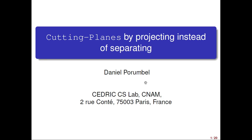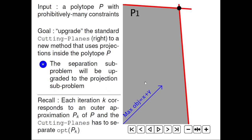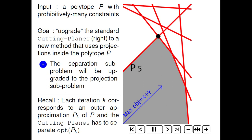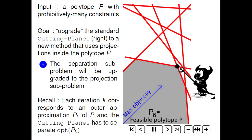Hi there, I will present a cutting-planes algorithm that works by projecting instead of separating. Let me first introduce the notation. We consider a polytope P with prohibitively many constraints. Such a polytope represents a linear program that is always solved by cutting-planes.